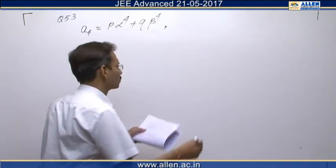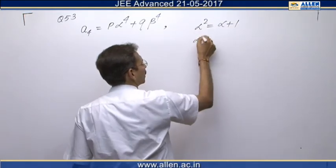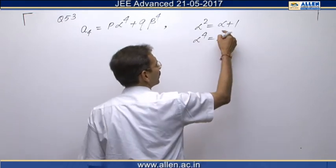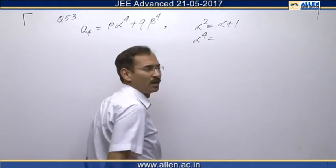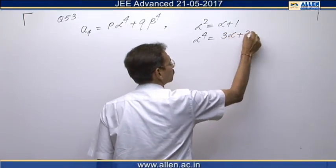We know that alpha and beta are the roots of this equation, therefore alpha square is alpha plus 1 and alpha power 4 will be square of alpha plus 1. Its square will be alpha square plus 2 alpha plus 1 and alpha square can be written as alpha plus 1. So this will become 3 alpha plus 2.